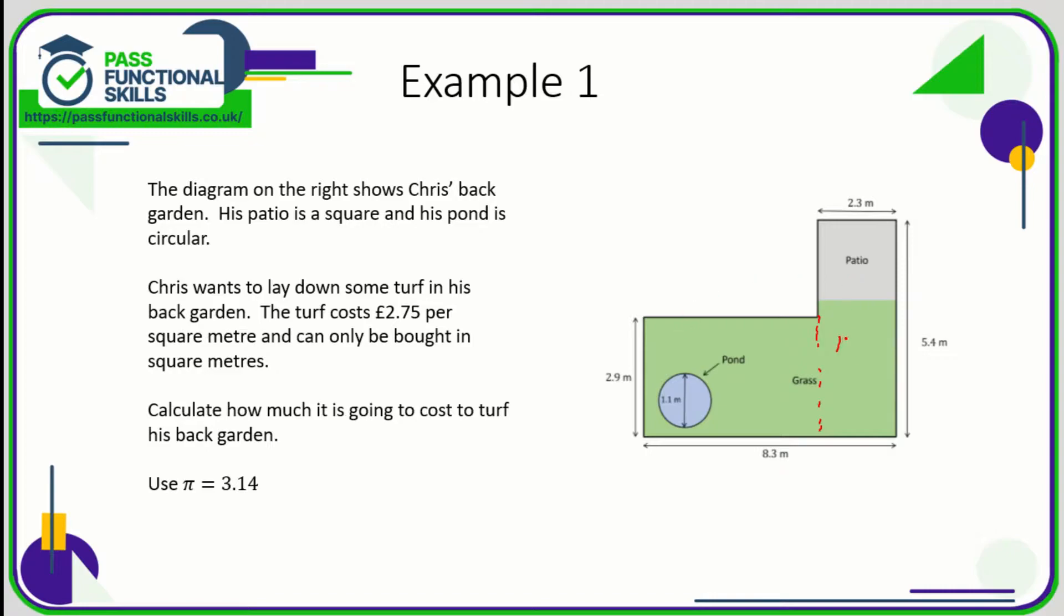This rectangular bit of the garden is 2.9 multiplied by this distance here, which we don't know. But we know it's 8.3 across the bottom and 2.3 for the patio, so this length here is 8.3 minus 2.3, which is 6 meters.